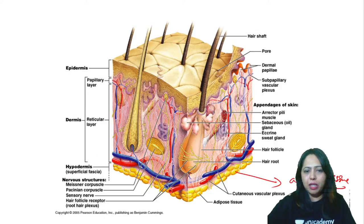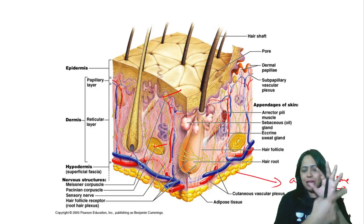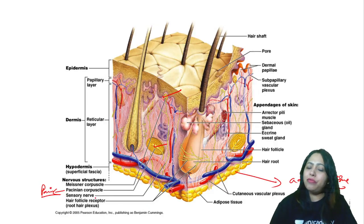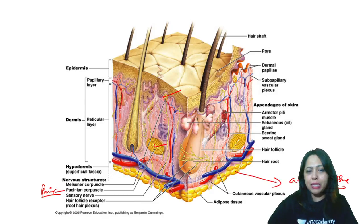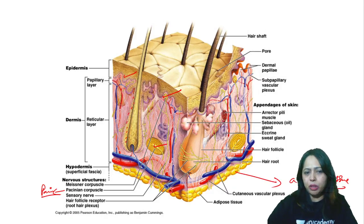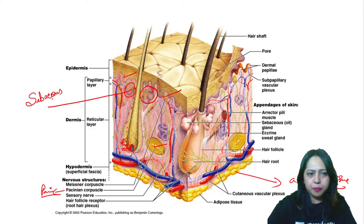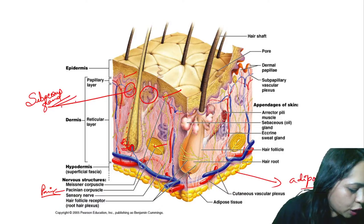We also have free nerve endings, hair root plexus receptors — all these are present in the dermis. Epidermal cells extend up to the root. The root also has papillae where blood vessels enter the hair root. You can also see the sebaceous gland — it is nourishing the hair follicle.